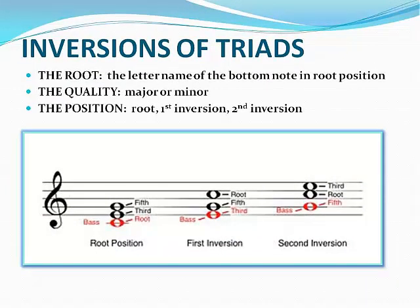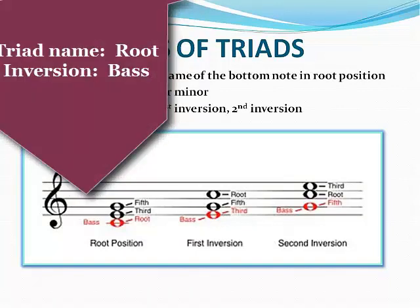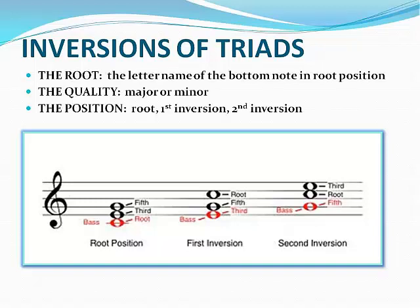Here we have the root position, first inversion, and second inversion of the C major triad. You may also find that the shape of the inversions will help you to identify which inversion the triad is in. It's important to remember that the triad is named by the root and the inversion is determined by the bottom note. The root of the chord never changes, even in inversions.